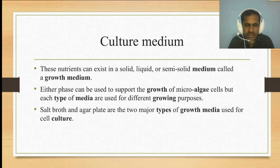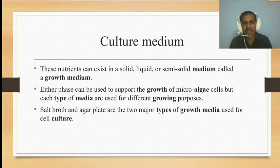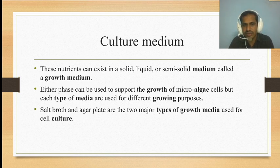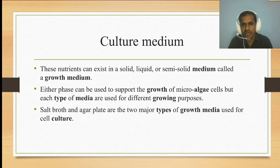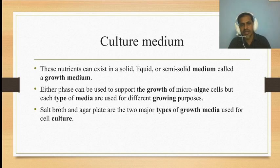Normally there are two types of growth media used in the cell culture of algae. One is salt broth, which is a liquid medium, and another one is agar plate, which is a solid medium. The agar plate is solidified by the process using agar-agar, which is also prepared from Gracilaria and Laminaria.